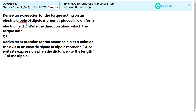Write the direction along which the torque acts. Second part: derive an expression for the electric field at a point on the axis of an electric dipole of dipole moment P vector. Also write its expression when the distance is greater than the length A of the dipole.